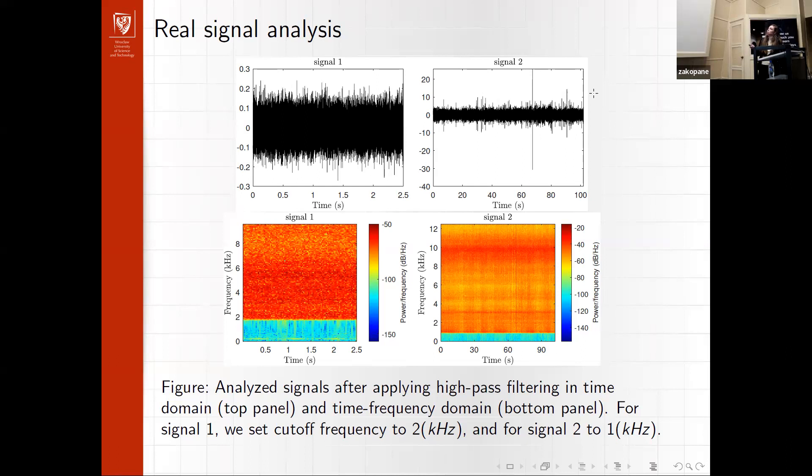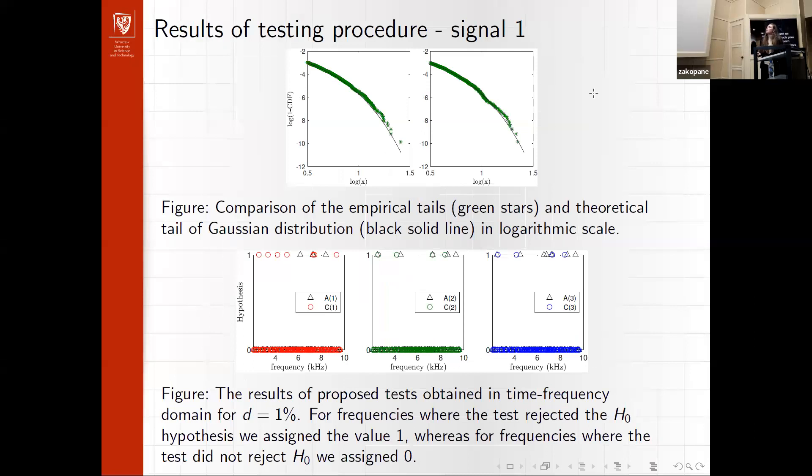When coming to the analysis in time domain, we segmented the signals into seconds. For signal 2, we had 101 seconds, and for signal 1, we had only 2 seconds. These are the results of our test for signal 1. Both of those seconds, all of the tests were classified as finite variance.